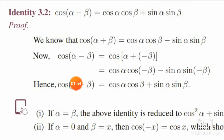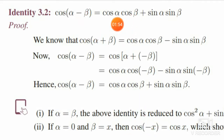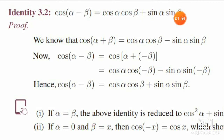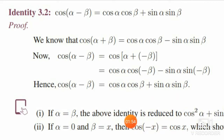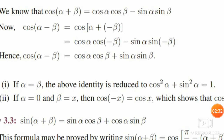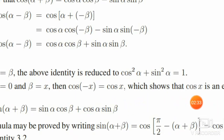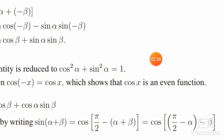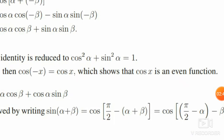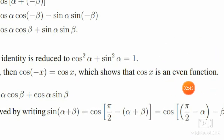In the second subdivision, substitute alpha equal to 0 and beta equal to x. Then the left hand side becomes cos of minus x. On the right hand side, cos 0 is 1, so the first term gives cos x. Since sin 0 is 0, the second term becomes 0. So cos of minus x equals cos x. This shows that the cosine function is an even function, because f of minus x is equal to f of x for an even function.